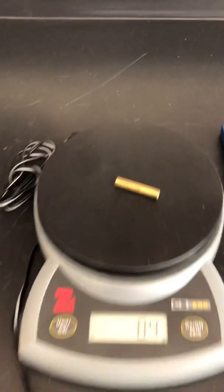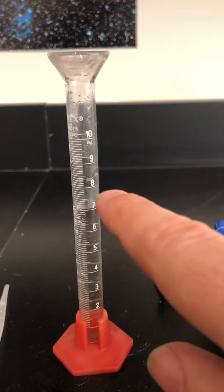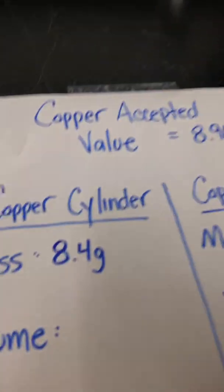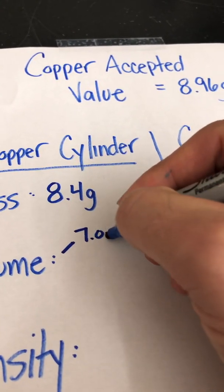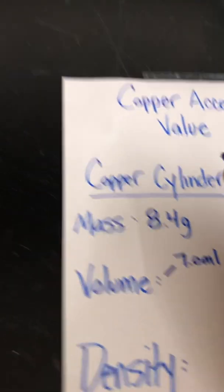Now the volume, because this is an irregular object, you need to do water displacement. So what I've done here is I've put my water level in my graduated cylinder up to seven milliliters. So my beginning value is 7.0 milliliters for the volume of the water.